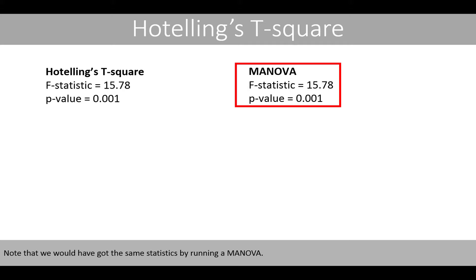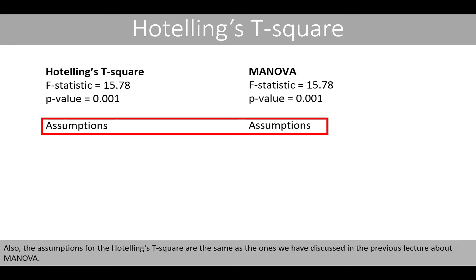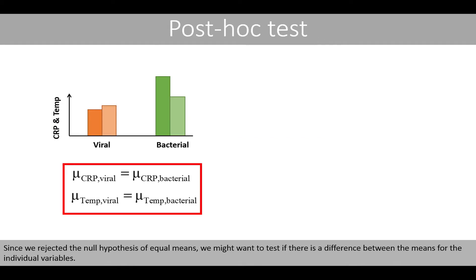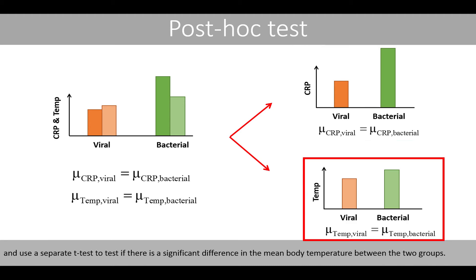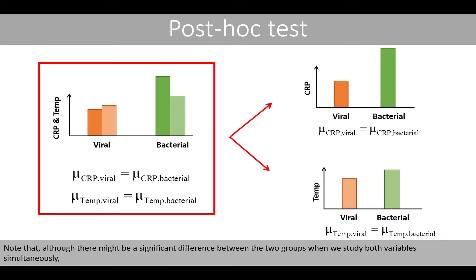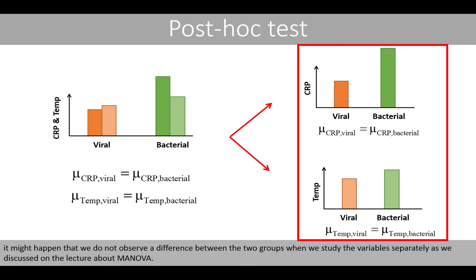Note that we obtained the same statistics by running a MANOVA. The assumptions for Hotelling's t-squared are the same as the ones discussed in the previous lecture about MANOVA. Since we rejected the null hypothesis of equal means, we might want to test if there is a difference between the means for the individual variables. For example, we could use a t-test to check if there is a significant difference in the mean CRP concentration between the two groups, and a separate t-test for mean body temperature. Note that although there might be a significant difference when studying both variables simultaneously, it may not be observed when studying variables separately, as discussed in the MANOVA lecture.